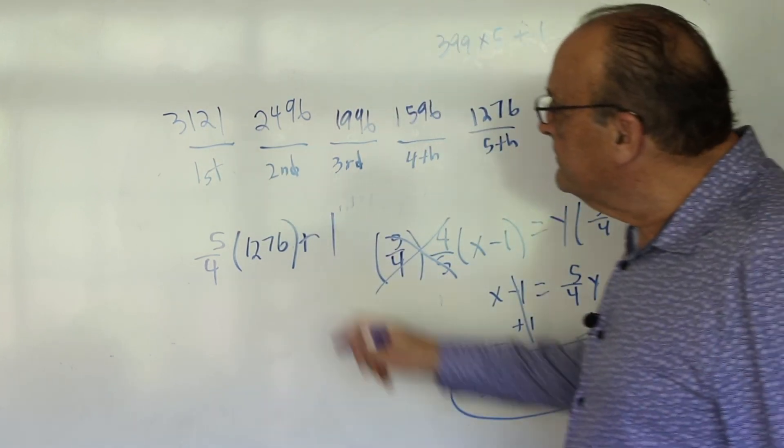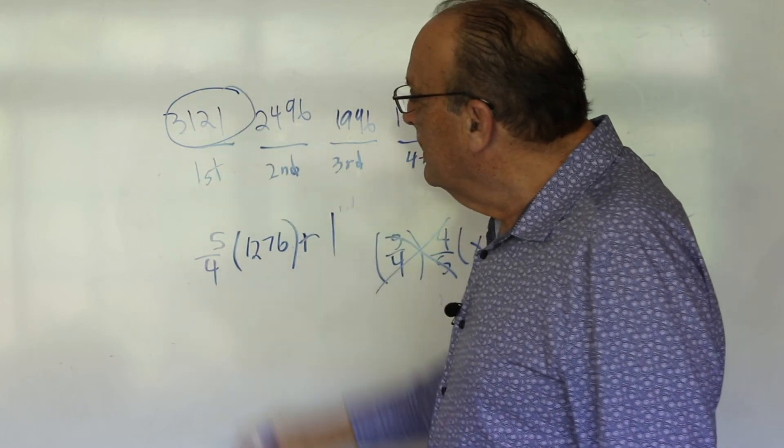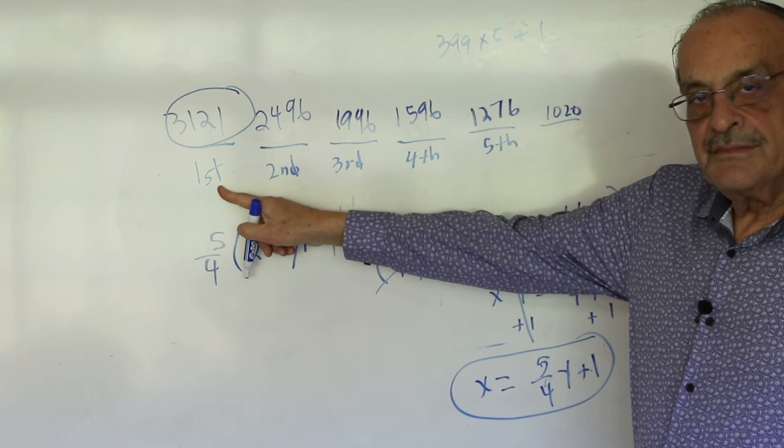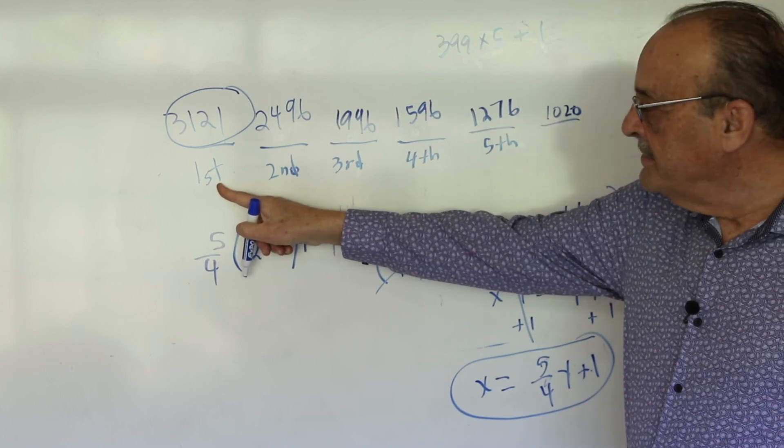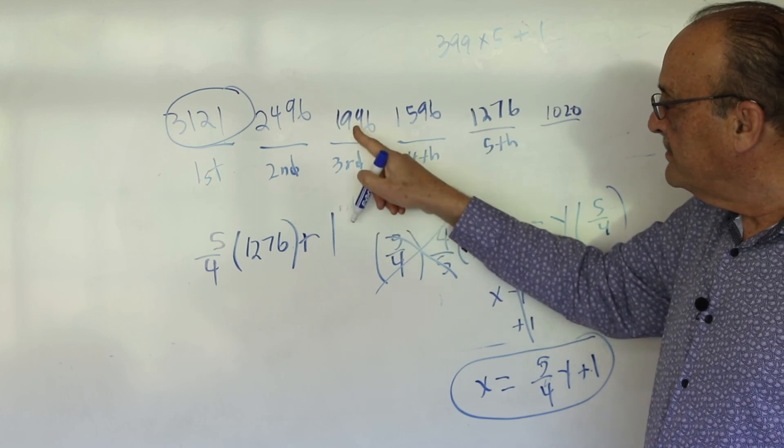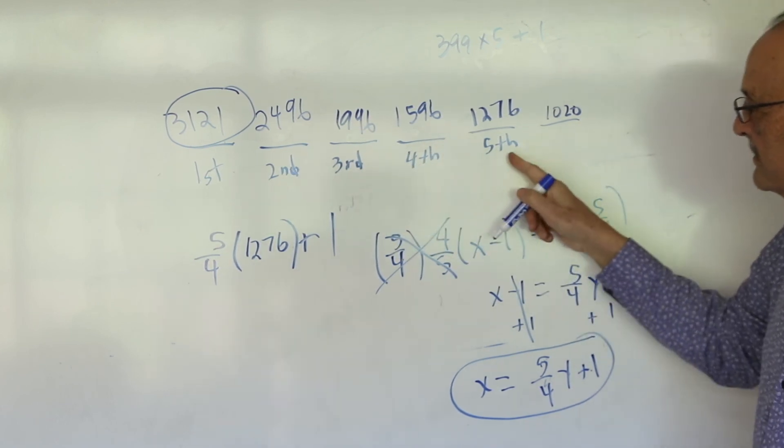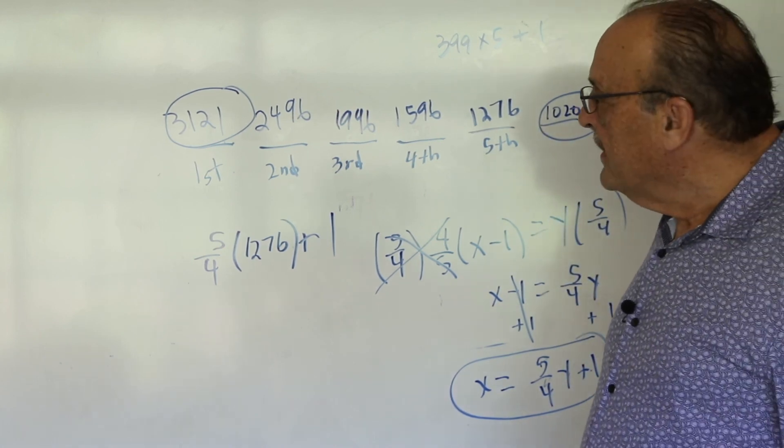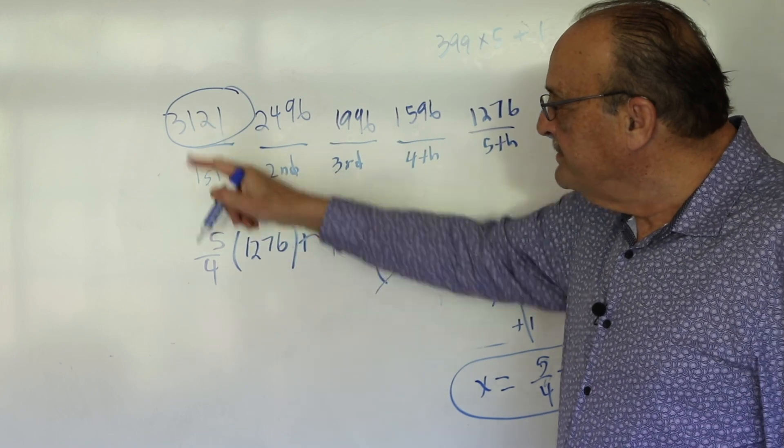So this is our answer. So the sailors found this many. This is what the first sailor woke up to. The second sailor woke up to this. The third sailor woke up to this. The fourth sailor woke up to this, etc. And this is how many coconuts there were when they all woke up at the end of the night. So this is the answer to the problem. Well, keep going for sure. Well done. See you next week.